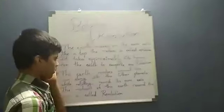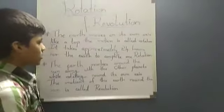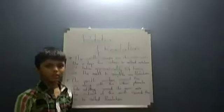It takes approximately 24 hours for the earth to complete one rotation. The imaginary line that connects north and south poles through the center of the earth is known as the axis of the earth.